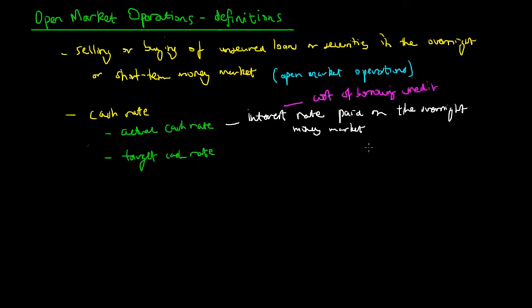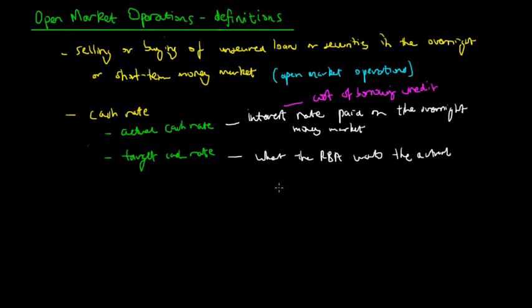If banks want to take out loans from the overnight money market to pay off their debts or financial obligations in the next financial day, they work with the overnight money market for short-term unsecured loans. The target cash rate is different — this is what the RBA wants the actual cash rate to be. They conduct open market operations to manipulate the monetary supply, or the monetary base, to make the actual cash rate as close as possible to the target cash rate.